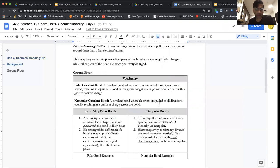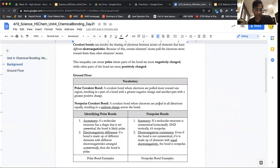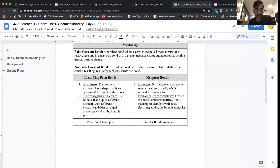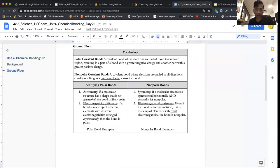Back to the resource. So I give you a little bit of background on covalent bonds, and then we have these definitions. A covalent bond where electrons are pulled more towards one region, that's a polar covalent bond, and a non-polar covalent is where electrons are pulled in all directions equally, resulting in a uniform charge. There's no part that's more negative. There's no part that's more positive.